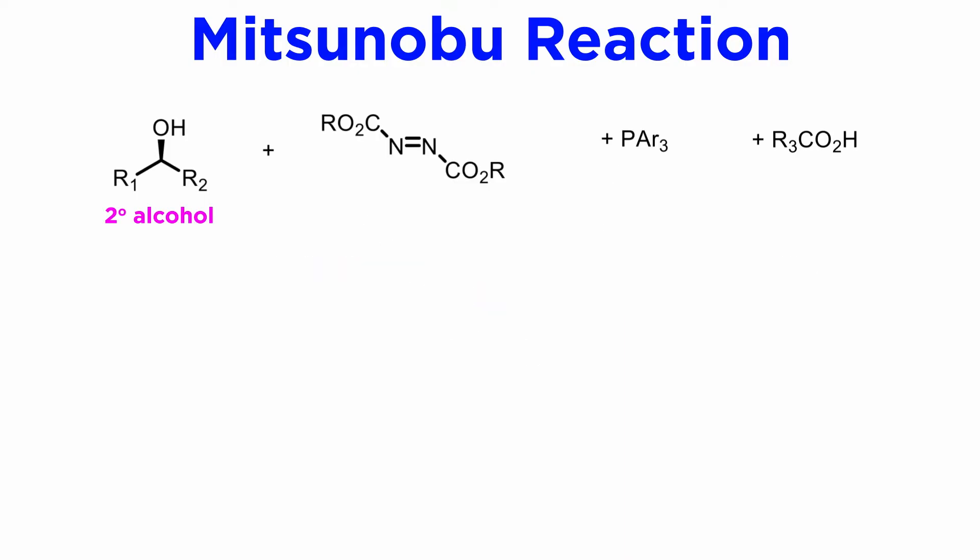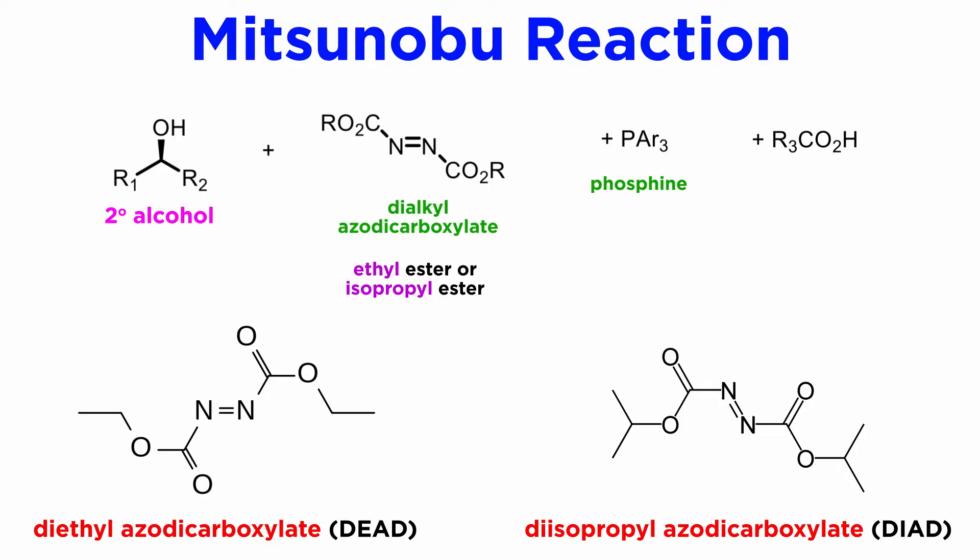This procedure employs two alcohol-activating agents: a phosphine and a dialkyl azodicarboxylate. Phosphines are often used as metal ligands, as discussed in the series on inorganic and organometallic chemistry. They are also moderately good nucleophiles. The azodicarboxylate is usually an ethyl ester or an isopropyl ester, commonly abbreviated as DEAD for diethyl azodicarboxylate, or DIAD for diisopropyl azodicarboxylate.